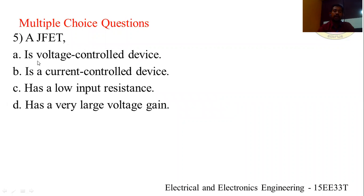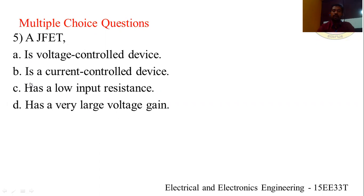The last question: a JFET is — options are: (A) a voltage control device, (B) a current control device, (C) it has a low input resistance, (D) it has very large voltage gain. The answer is option A — JFET is a voltage control device. FET is a voltage control device, whereas BJT is a current control device.